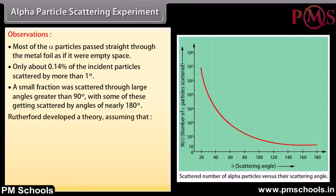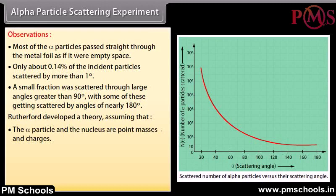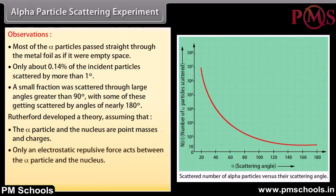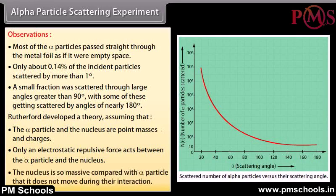Rutherford developed a theory assuming that the alpha particle and the nucleus are point masses and charges. Only an electrostatic repulsive force acts between the alpha particle and the nucleus. The nucleus is so massive compared with the alpha particle that it does not move during the interaction.